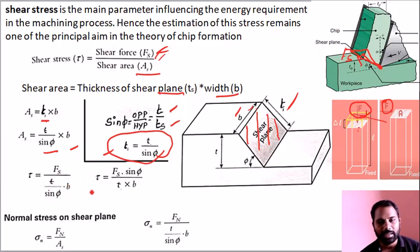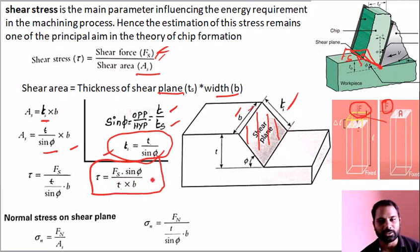Now we know the shear stress formula. The shear stress equals Fs times sin(φ) divided by uncut chip thickness T times width B. This is the shear stress formula.